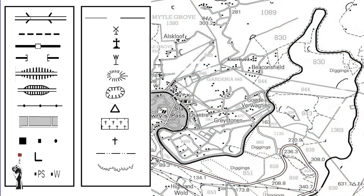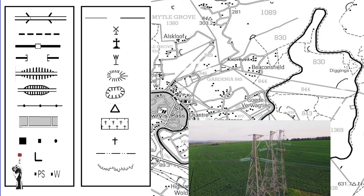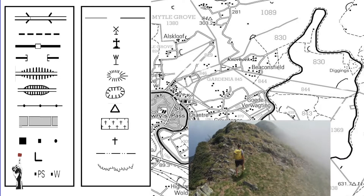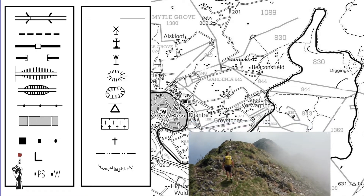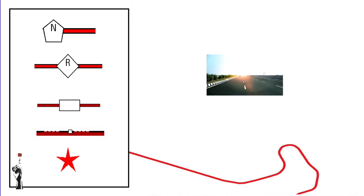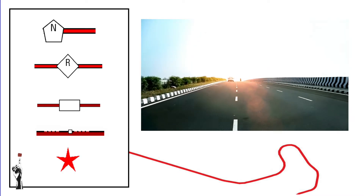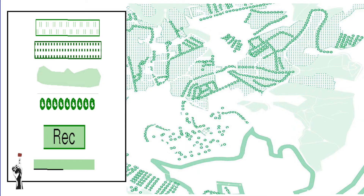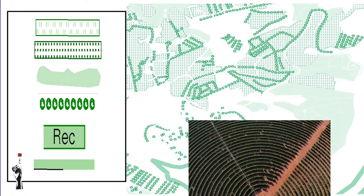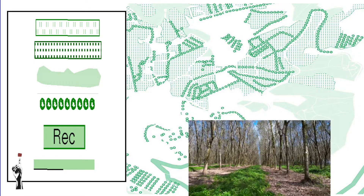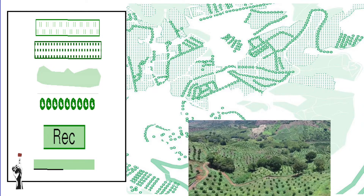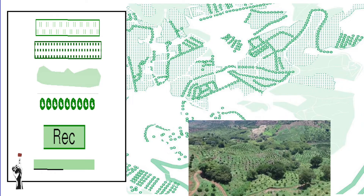We have black representing everything that is artificial — the power lines, hiking trails, and walls are represented by black. Then there's red, which represents the national roads. Green represents everything that is planted, so green represents our vegetation — trees and cultivated lands will all be represented by green.